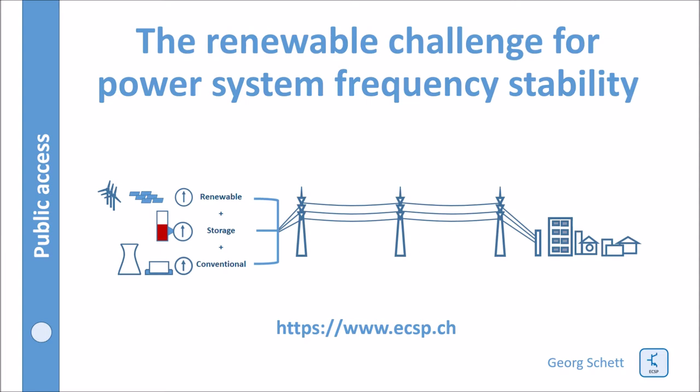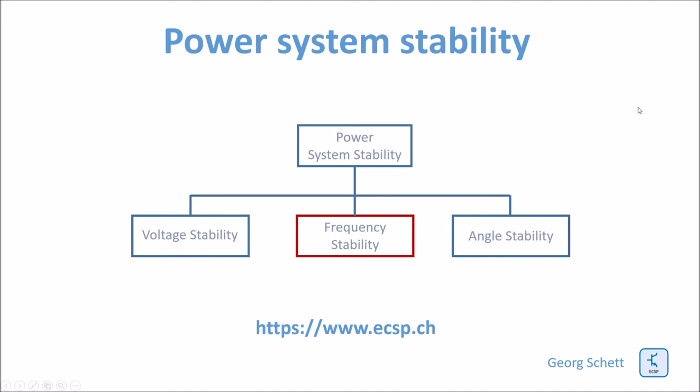This video is about intermittent renewable energy challenging the frequency stability of the power system. The power system stability consists of three topics: voltage stability, frequency stability, and angular stability.